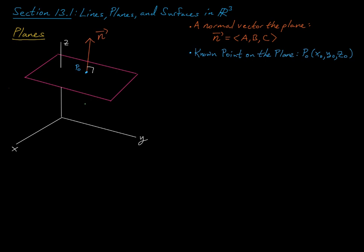To start, let's first ask what really defines a plane in three-dimensional space. The first thing we need to determine is the orientation of the plane relative to the coordinate axes. The way we determine that orientation is through what's called a normal vector — a vector that is orthogonal to our plane.